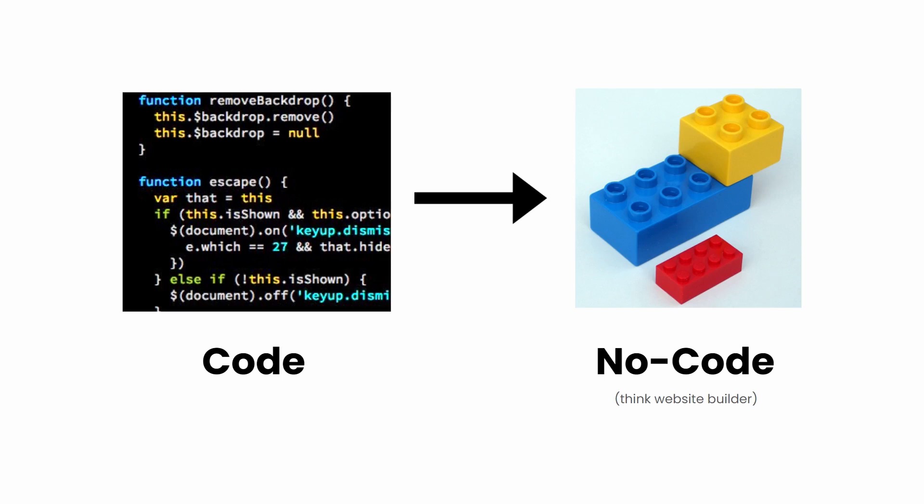In no code, we're using other people's software to build our own software. Think of a website builder — we're dragging and dropping things, point and click. But we run into the issue where sometimes we can't do everything we want on somebody else's platform.